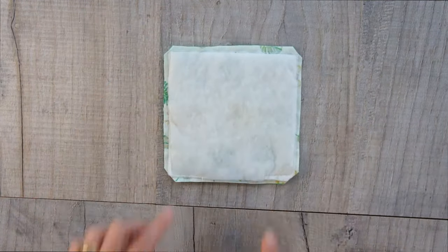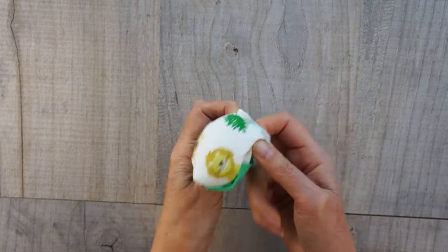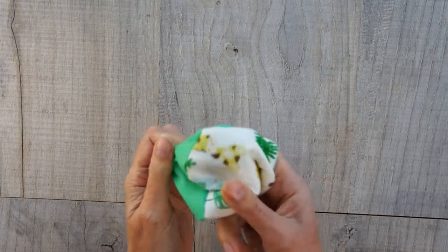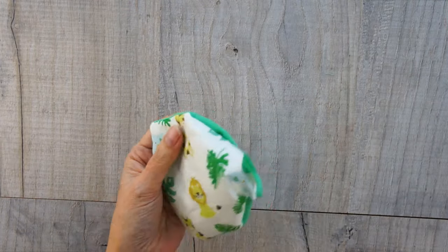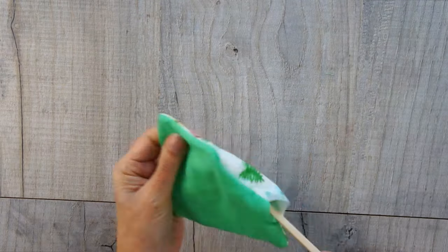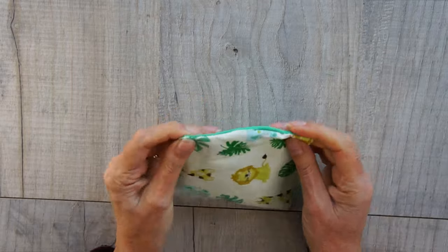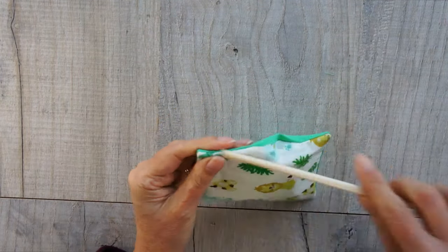And then it's time to turn your mat through. So, simply turn it through with your fingers and get it so most of it's through. And then I recommend using something similar to a chopstick to poke into the corners. You don't want it too sharp because you don't want to cut through your stitches. But you need something just to get those corners out properly.